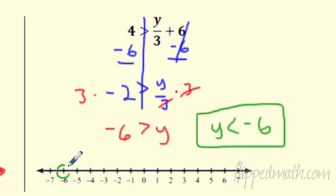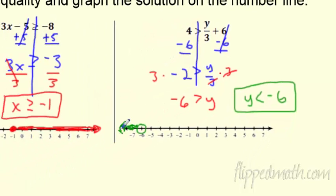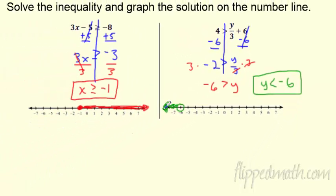So go to negative 6. Put a circle in that bad boy because he doesn't equal it. And we're going to shade this way. Awesome. So really that's it. It's combining the shading we did last time with the solving equations we did last chapter.